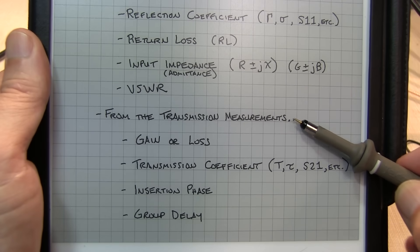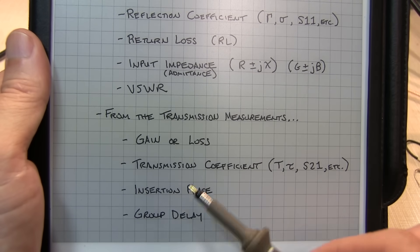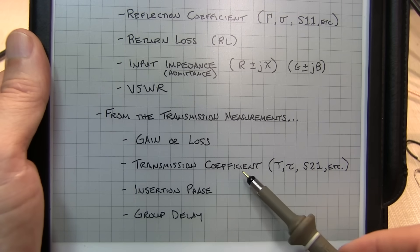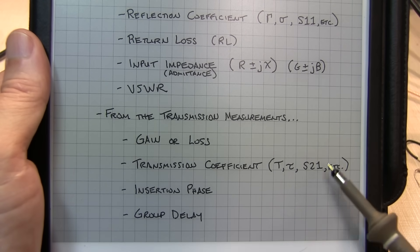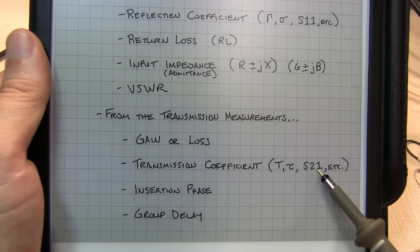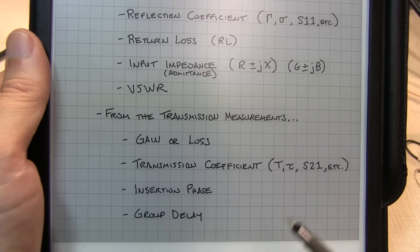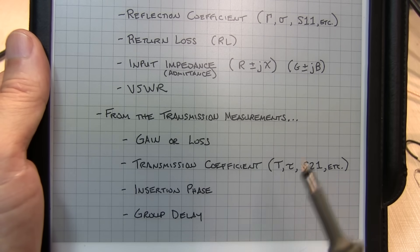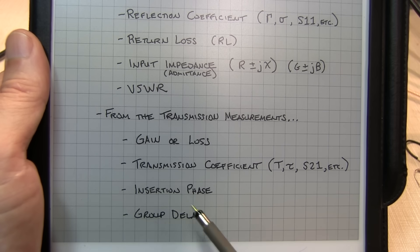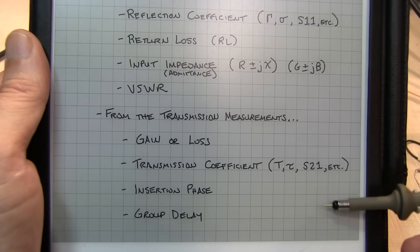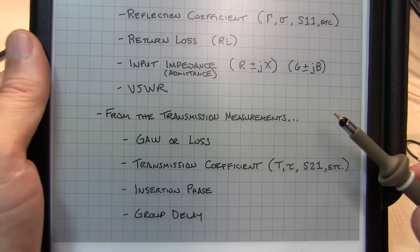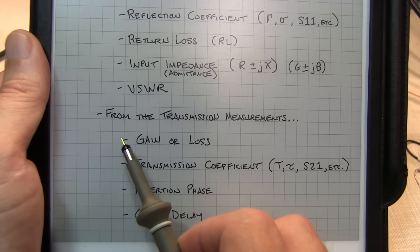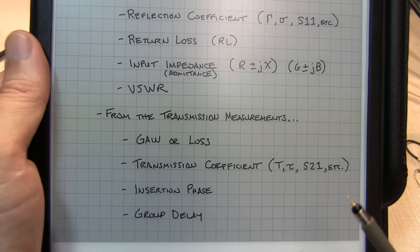From the transmission measurements, we're typically measuring the gain or loss of the device under test. That gives rise to a measurement of the transmission coefficient, which is a complex value and is also an S-parameter called S21 — essentially the output at port 2 in response to an input signal applied to port 1. We might also measure the insertion phase, or how much phase shift occurs through the device under test. There's another parameter called group delay, which is essentially a measure of delay through the device across frequency. For each of these measurements, you typically need a two-port VNA.